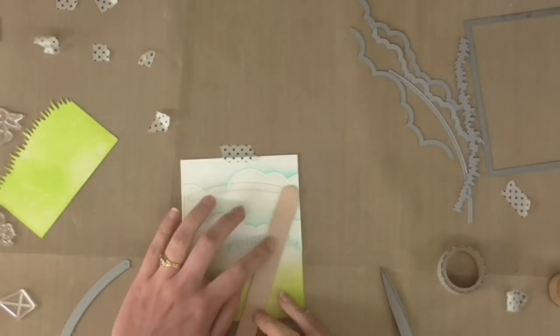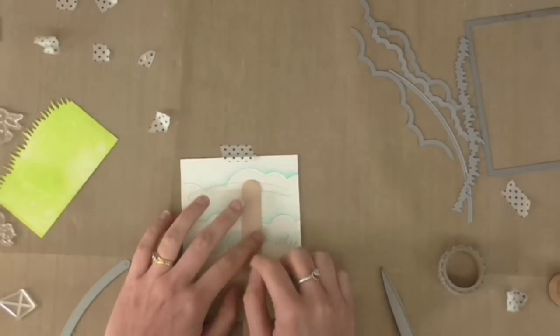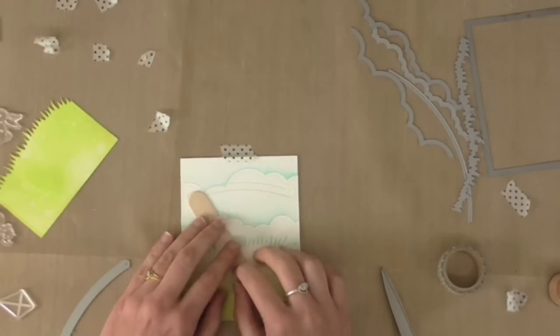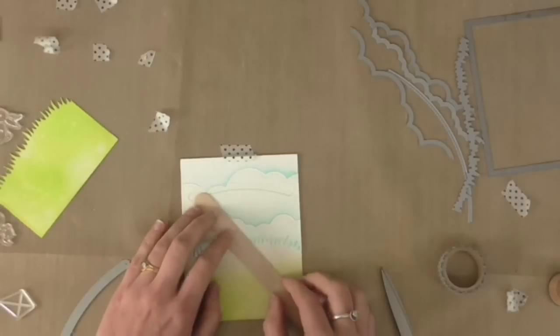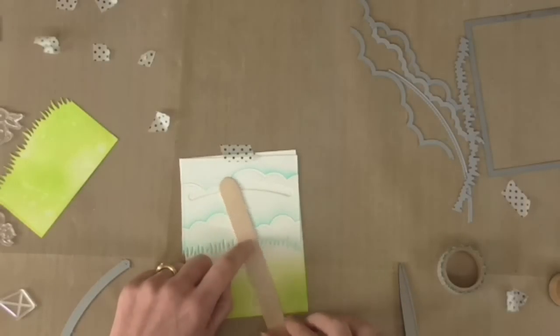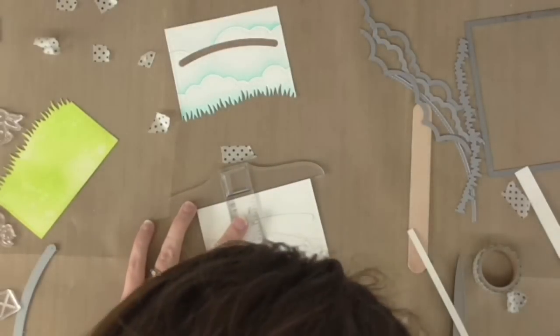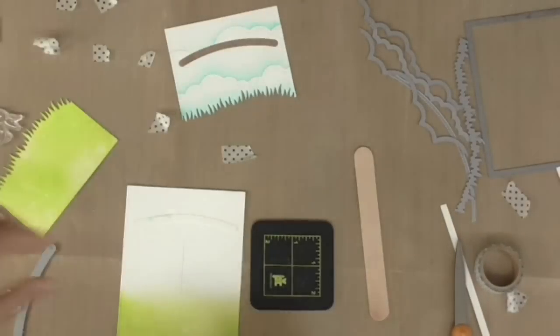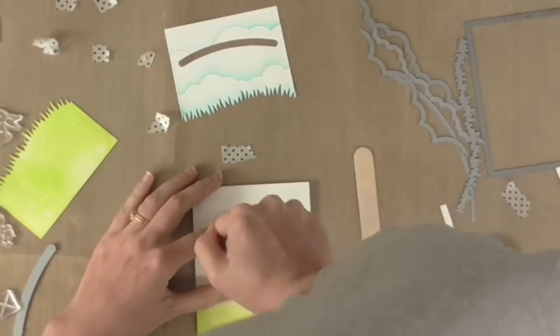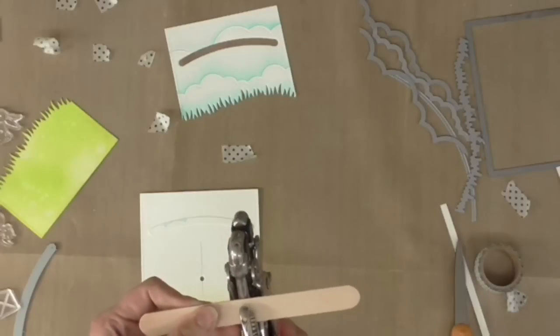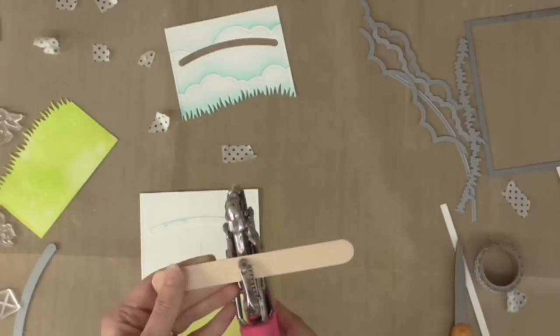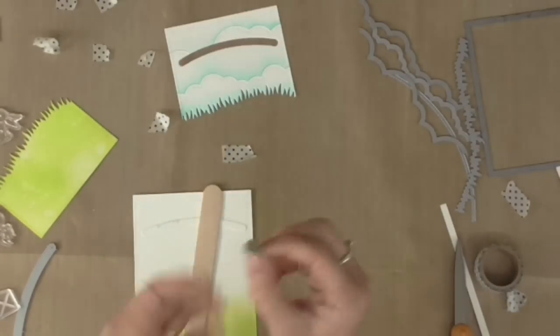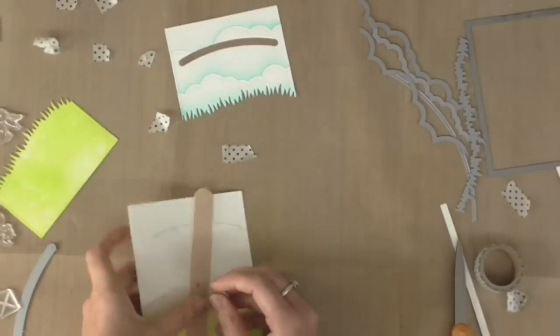I'm using one of these tongue depressors or craft sticks here for the mechanism which is going to make my kite move and to do so I need a hole in the wood and also a hole in that bottom panel. So I'm drawing a line down the center of my rectangle here and I'm using a eyelet setter to create a hole in the middle of the card and my crop-a-dile to cut a little hole in the little craft stick.